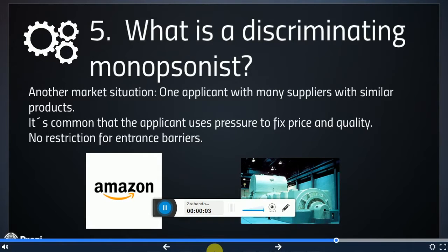The definition of discriminating monopsony is a market where there are many players for just one applicant. It is very common in specific goods such as war tanks for the army or public industry companies. In monopsonies, the applicant could make pressure to get what they want in terms of price and quantity.